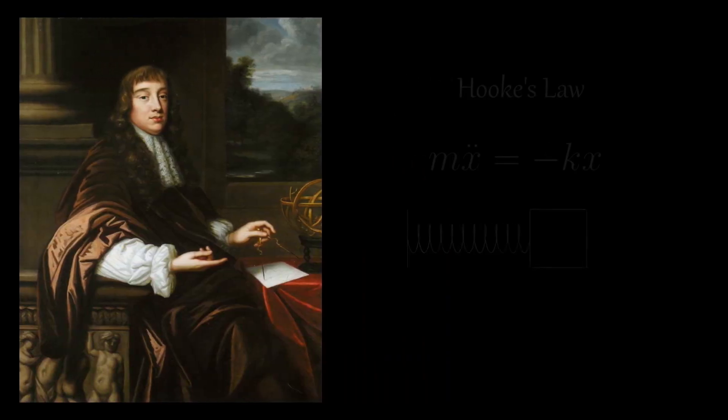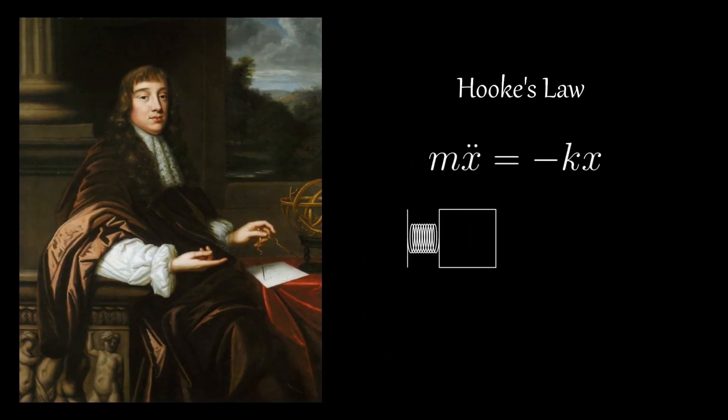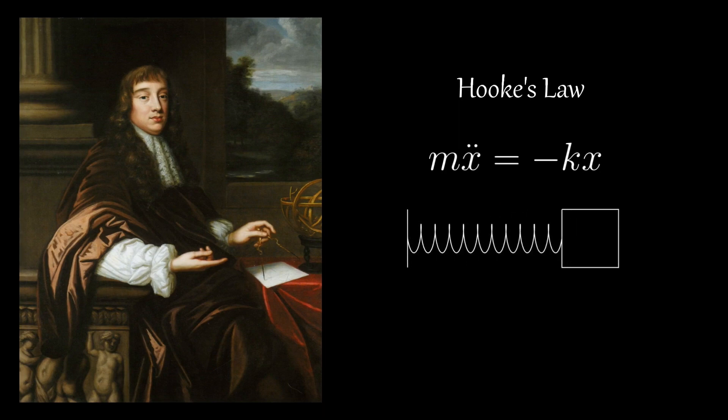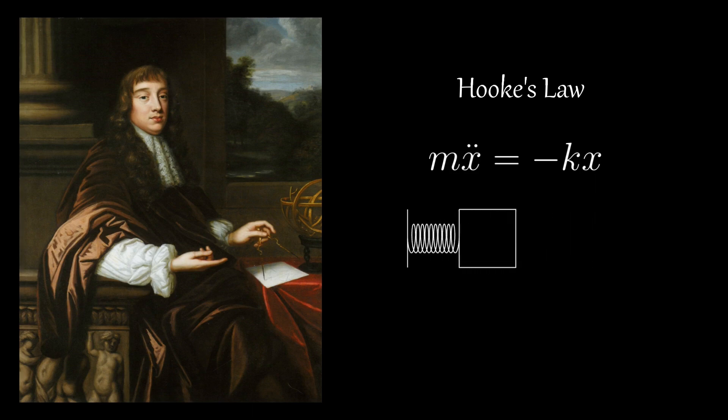The story of springs originates with Robert Hooke, where he derived a relationship between the force exerted by the spring and the position relative to the spring's resting length. He found it to be linear, meaning if you stretch out the spring by twice the distance, the force exerted by the spring also doubles.